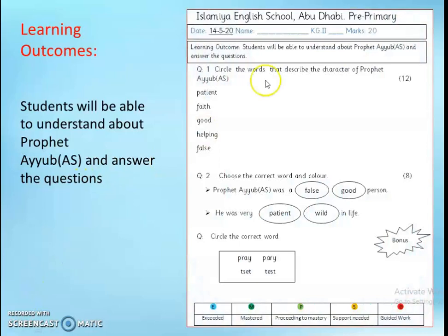Here is our assessment worksheet. Here, question number 1. You will circle the words that describe the character of Prophet Ayub Alayhi Salaam. Down you can see some words related to Prophet Ayub Alayhi Salaam. We will circle the correct words.